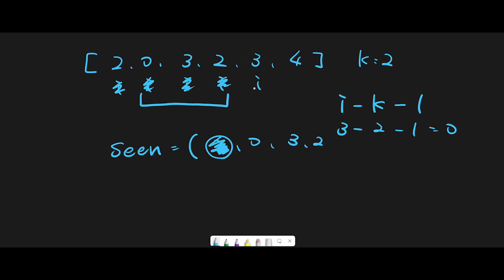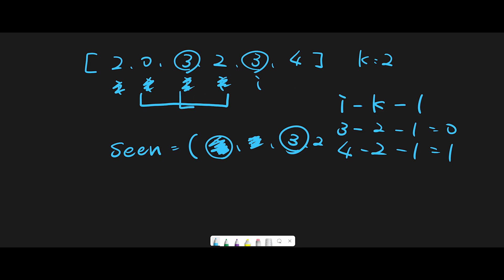Move next, we found 3. First, remove the number that is out of bounds: index 4 minus k (2) minus 1 equals 1, so index 1 is out of bounds — that is 0 — so remove 0 from the set. Then check if we have 3 in the set — we do! This 3 is within the distance of k. Search range is from index 2 to index 4, so they are a valid pair. In that case, we should return true.